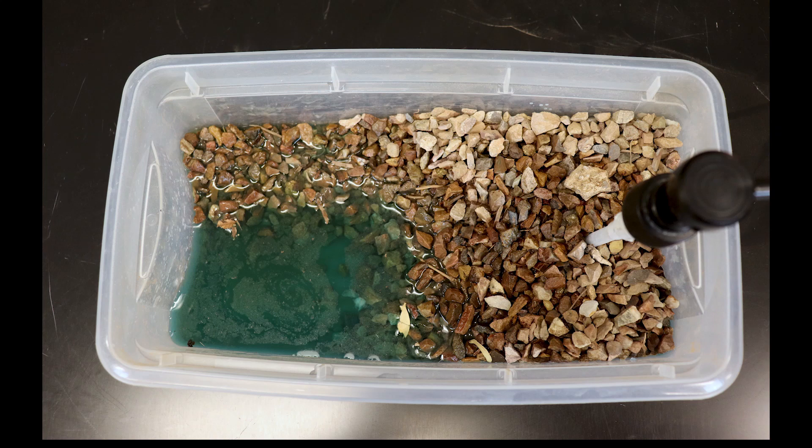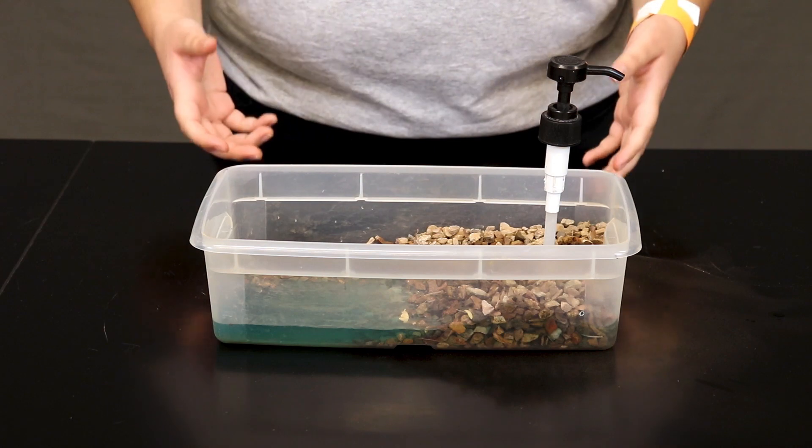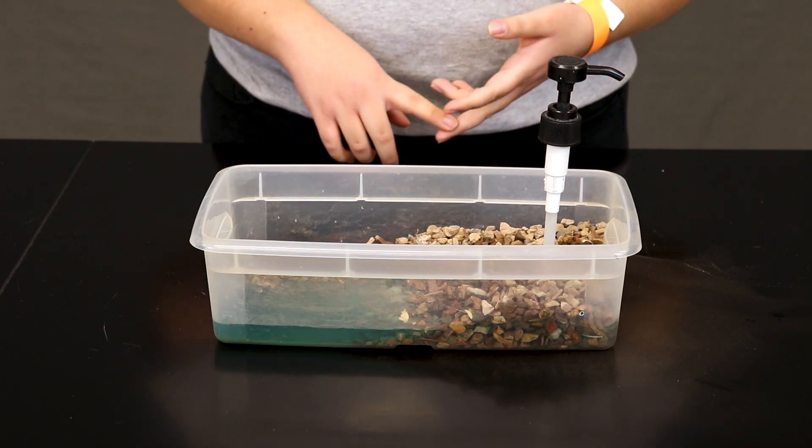Now observe it closely. Is this water underground? Is it groundwater? No. Where is it? This water is on the surface. We call this surface water. Some examples of surface water are lakes and rivers.